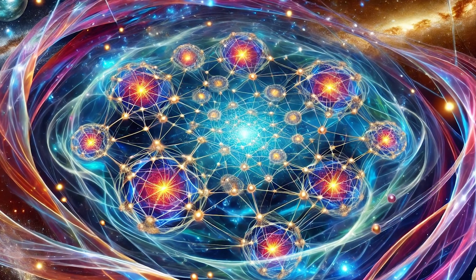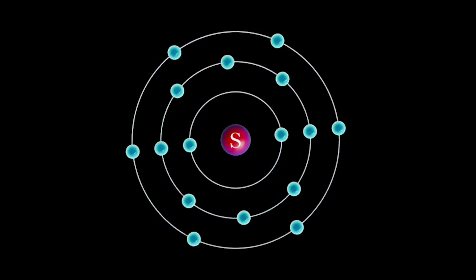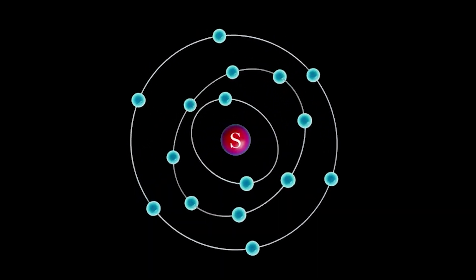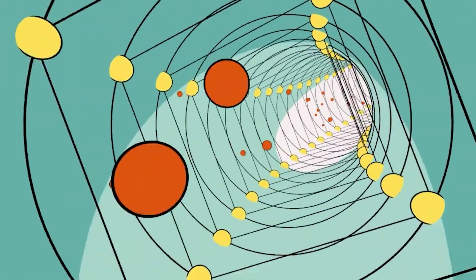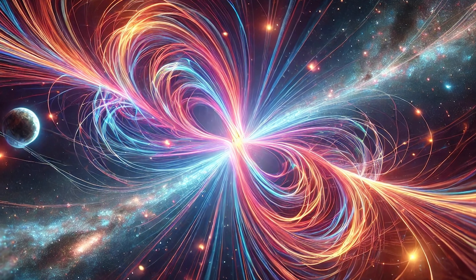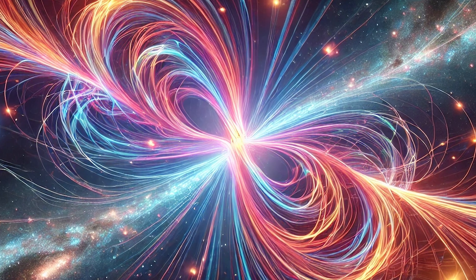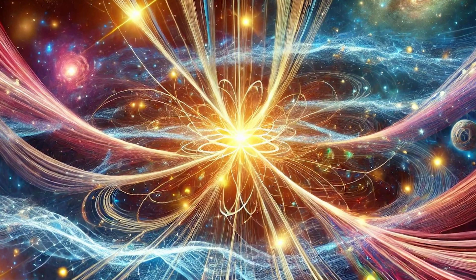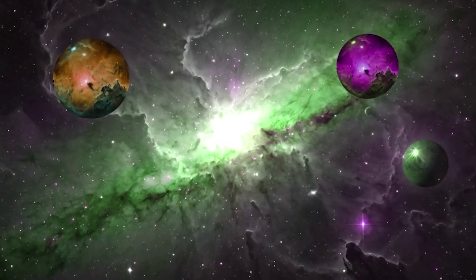Let's look at the role of branes in string theory and what string theory says about the universe's origin. It compels us to reimagine what reality is made of. Instead of considering subatomic particles as the building blocks of matter, string theory suggests that tiny vibrating strings — even smaller than the smallest subatomic particles — created our universe. As these strings vibrate, twist, or fold, they produce energy, matter, and other phenomena like gravity. Each string vibrates in space-time with seven dimensions beyond the usual three of space and one of time.